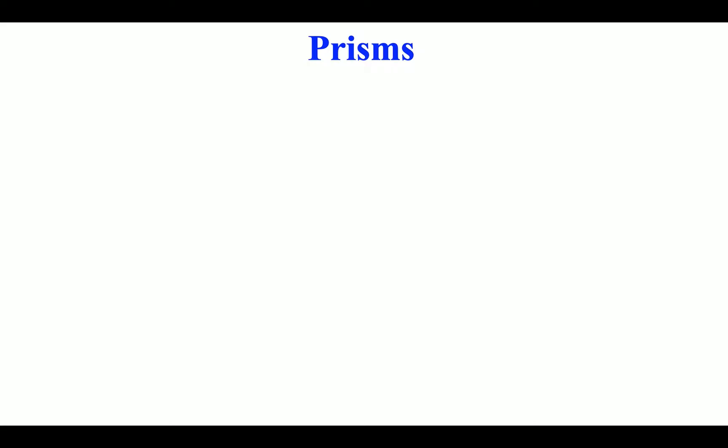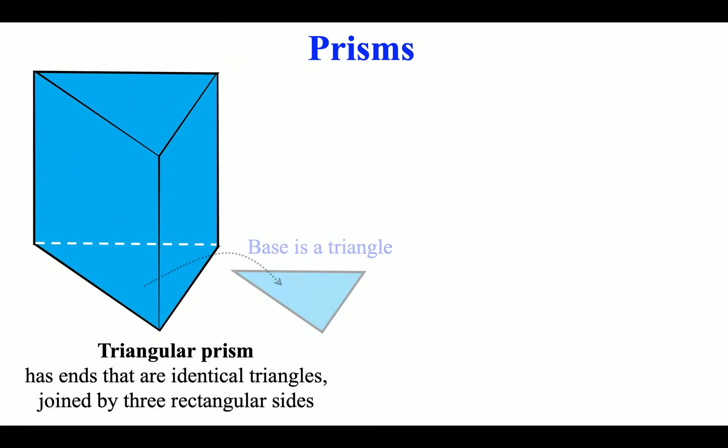Prisms. Triangular prism has ends that are identical triangles, joined by three rectangular sides.